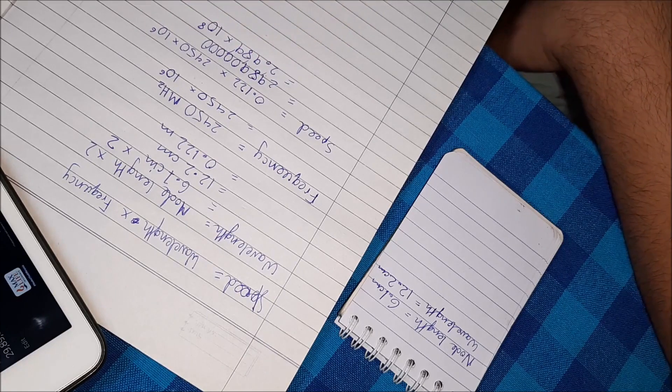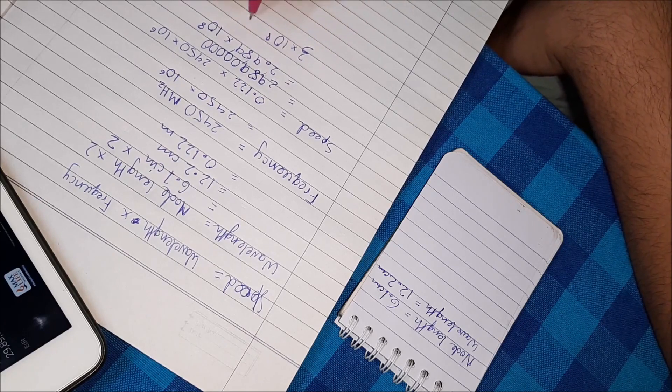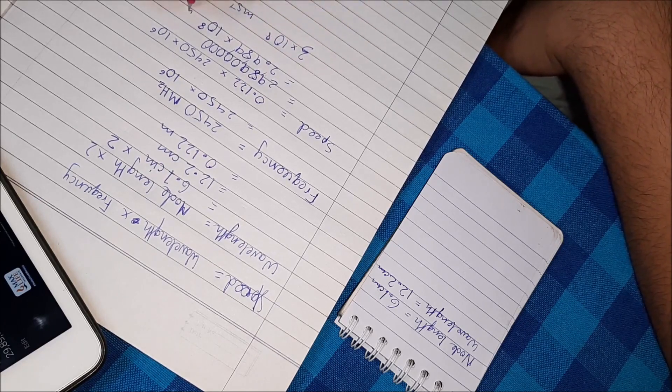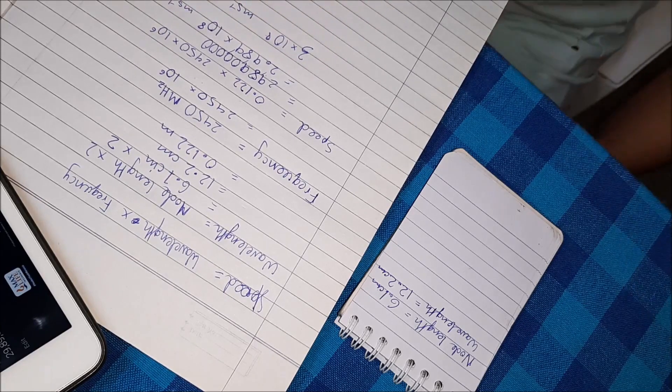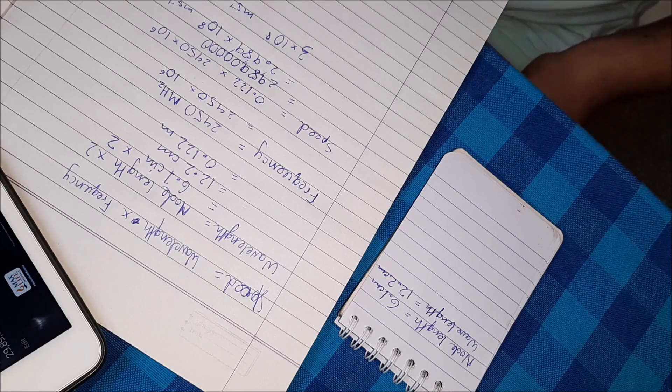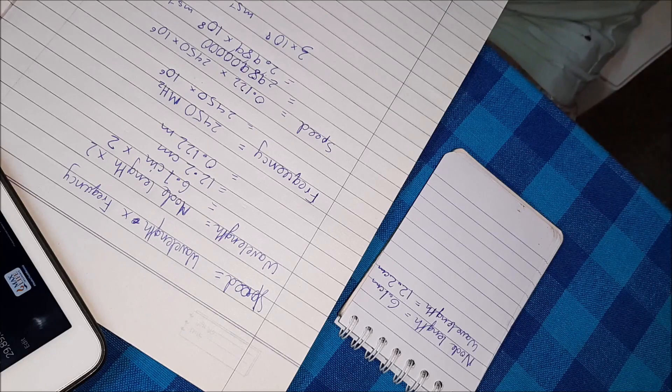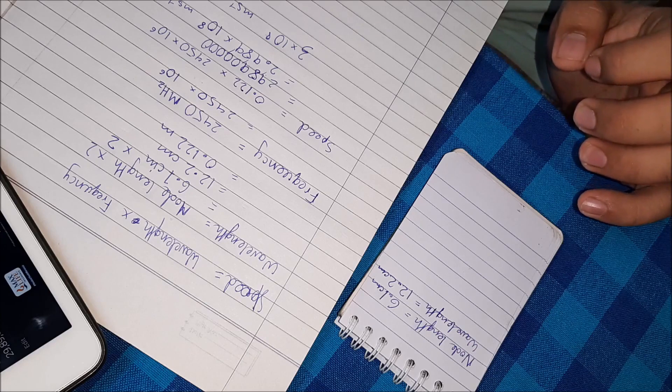And the actual speed of light in a vacuum is 3 into 10 to the power 8 meters per second. And the result we got was pretty satisfactory. It's a bit short of the speed of light in a vacuum. But the microwave is not a vacuum. So with this we conclude our experiment. And we find that the speed of light can actually be calculated pretty satisfactorily from a microwave.